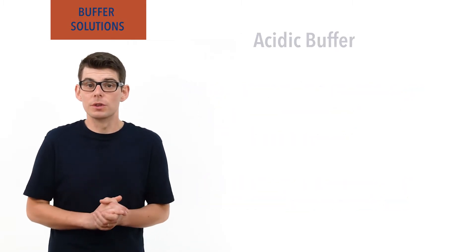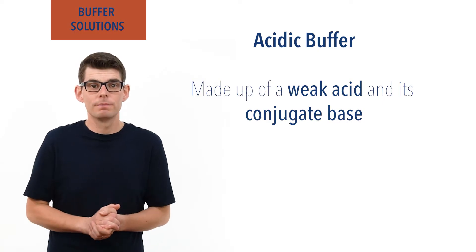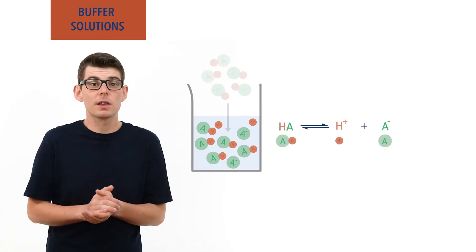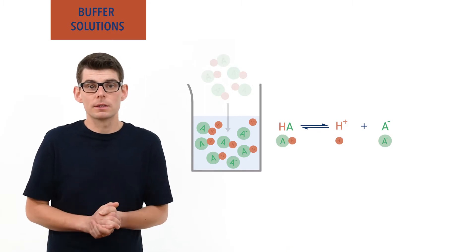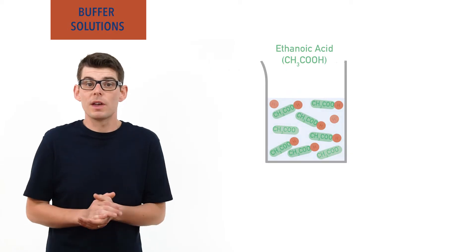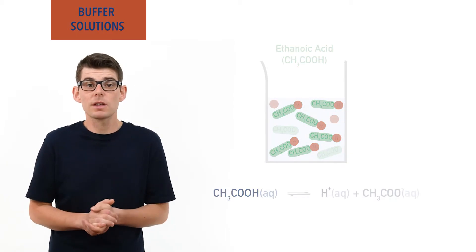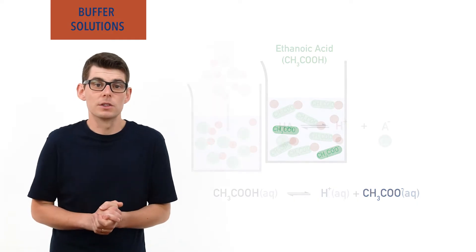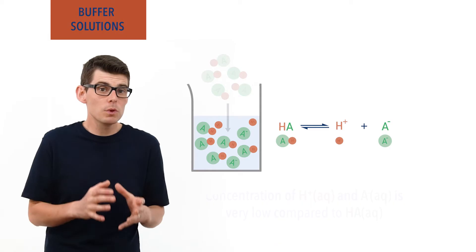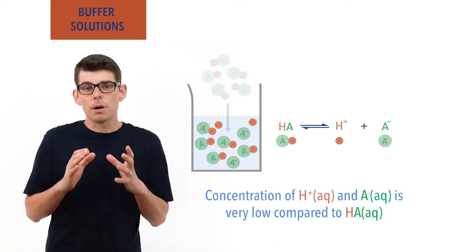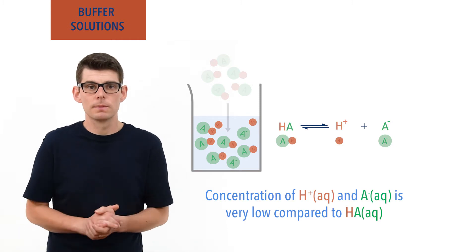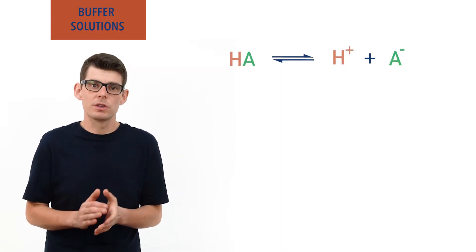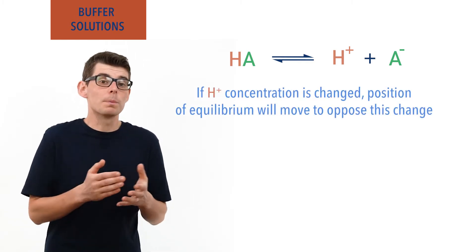An acidic buffer solution is made up of a weak acid and its conjugate base. When dissolved in water, weak acids form an equilibrium system between molecules of the acid HA, H⁺ ions, and conjugate base ions A⁻. For example, ethanoic acid in water gives a mixture of ethanoic acid molecules, H⁺ ions, and ethanoate ions. The concentration of H⁺ ions in the equilibrium mixture will be much smaller than the concentration of HA molecules, as only partial dissociation of the acid occurs. Le Chatelier's principle tells us that once this equilibrium is established, if H⁺ ion concentration is changed, the position of equilibrium will move to oppose this change.